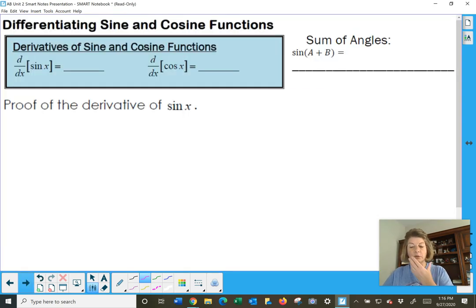Derivatives of sine and cosine. The derivative of sine is cosine of x, and the derivative of cosine is negative sine of x.